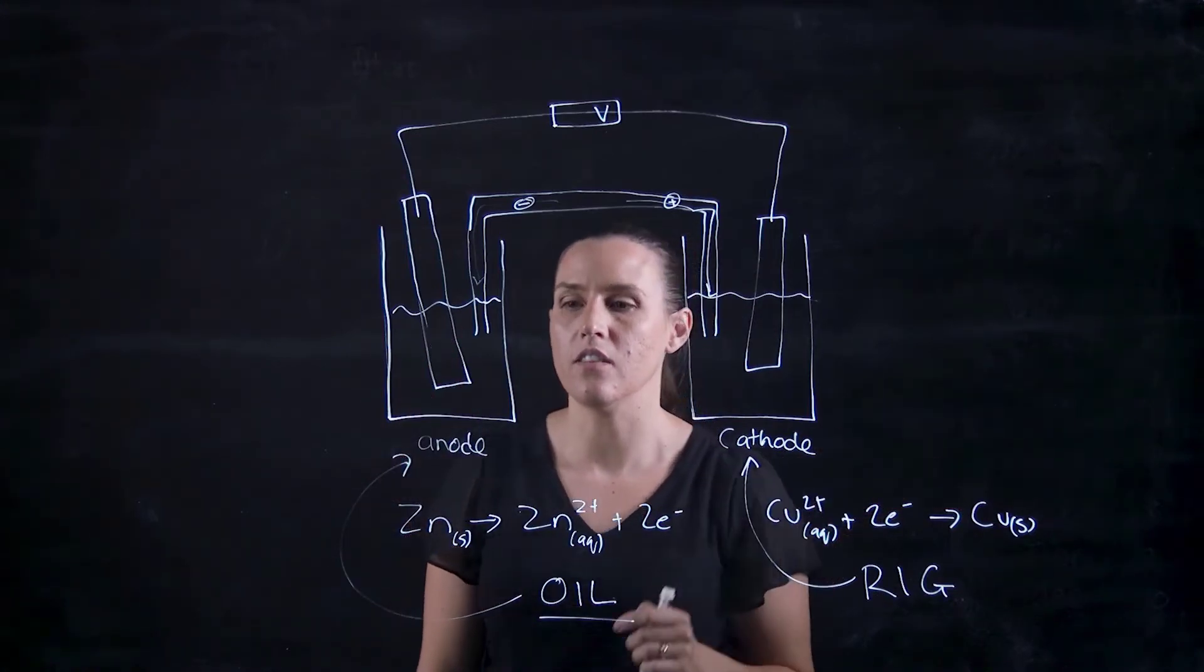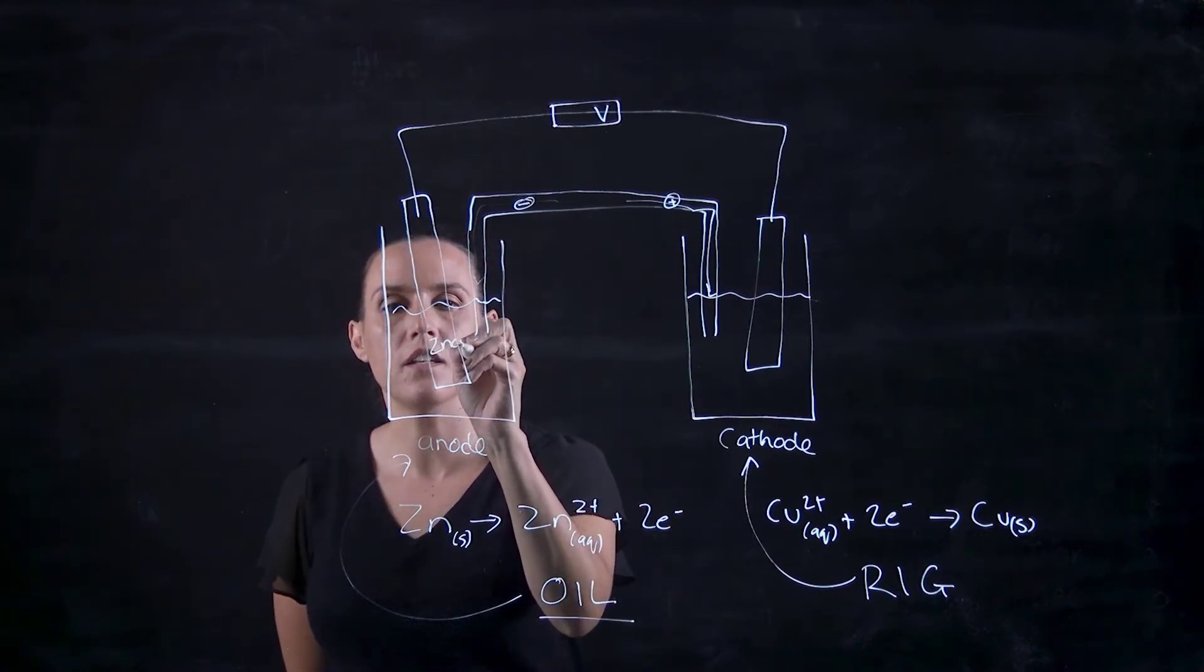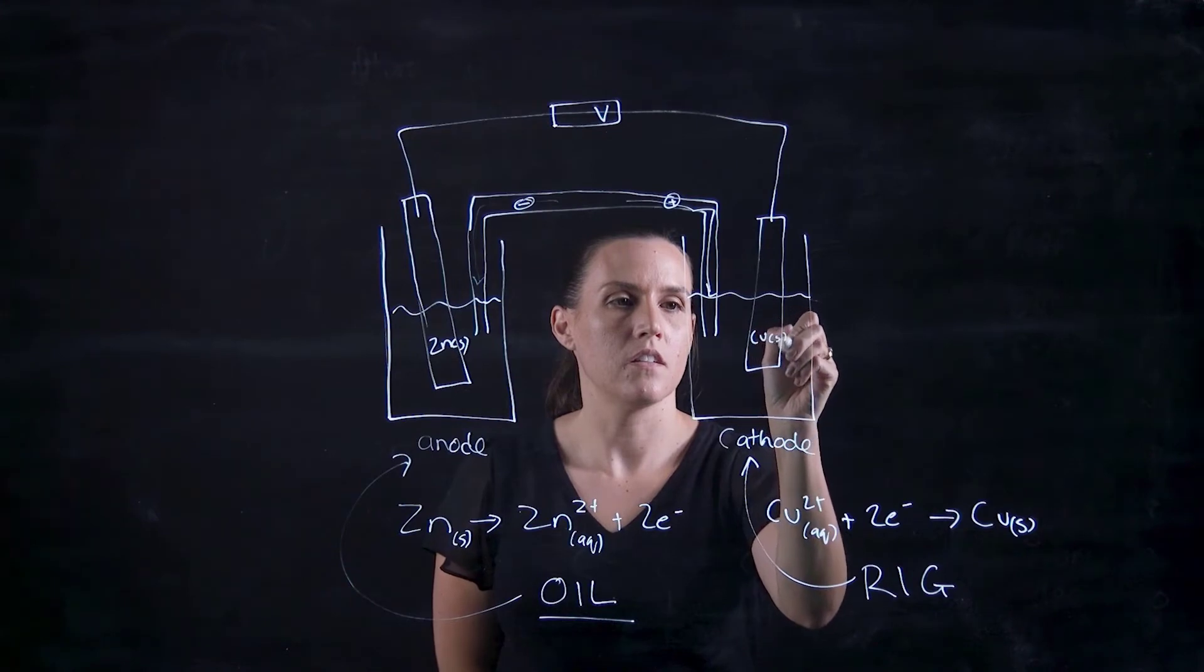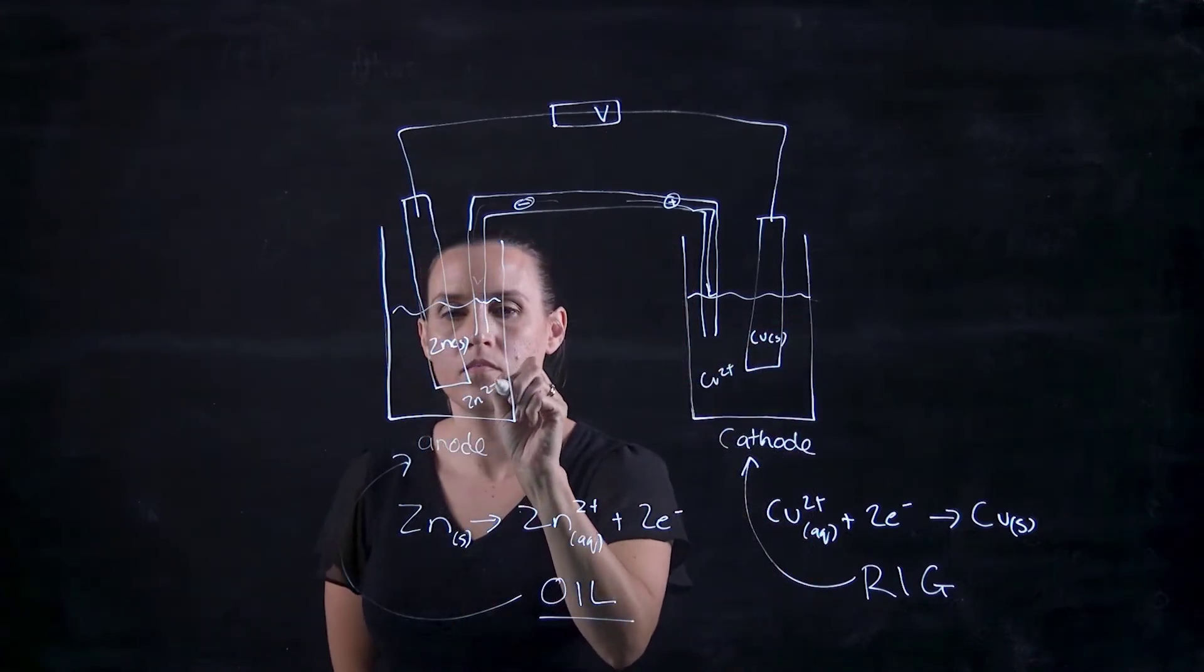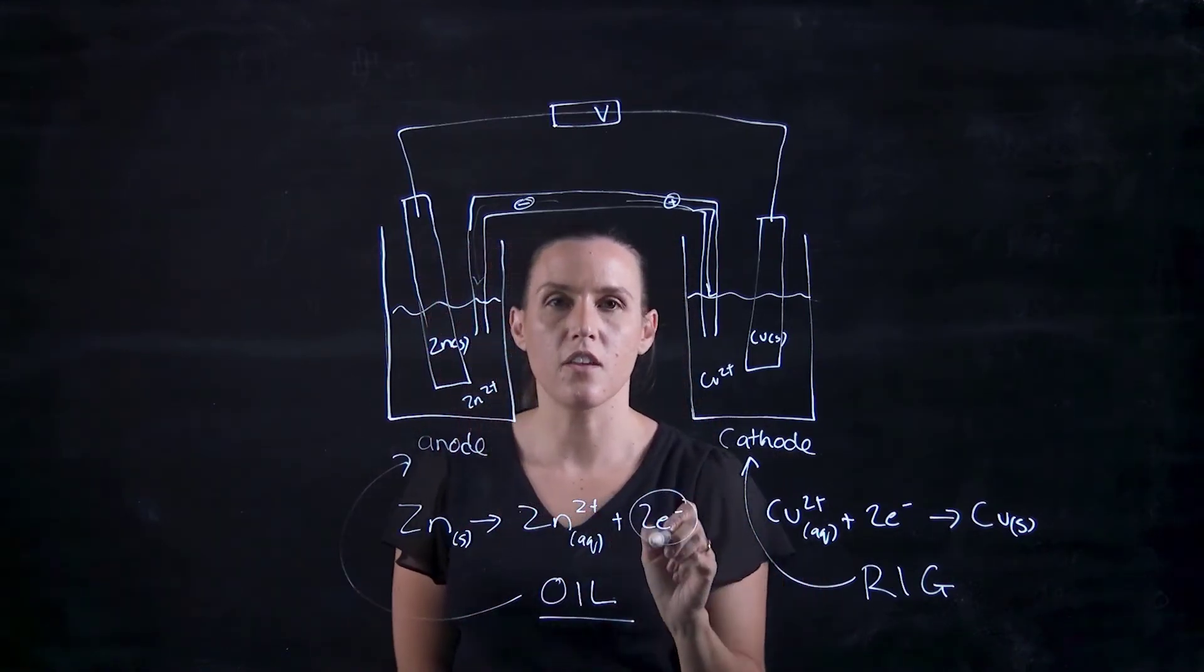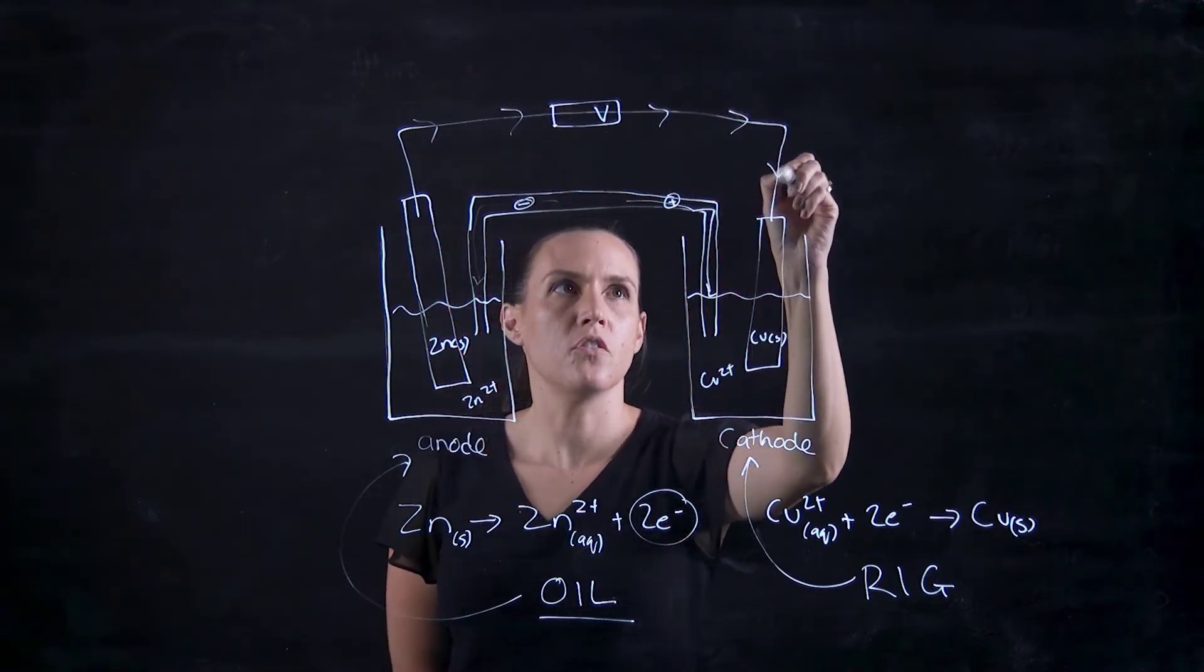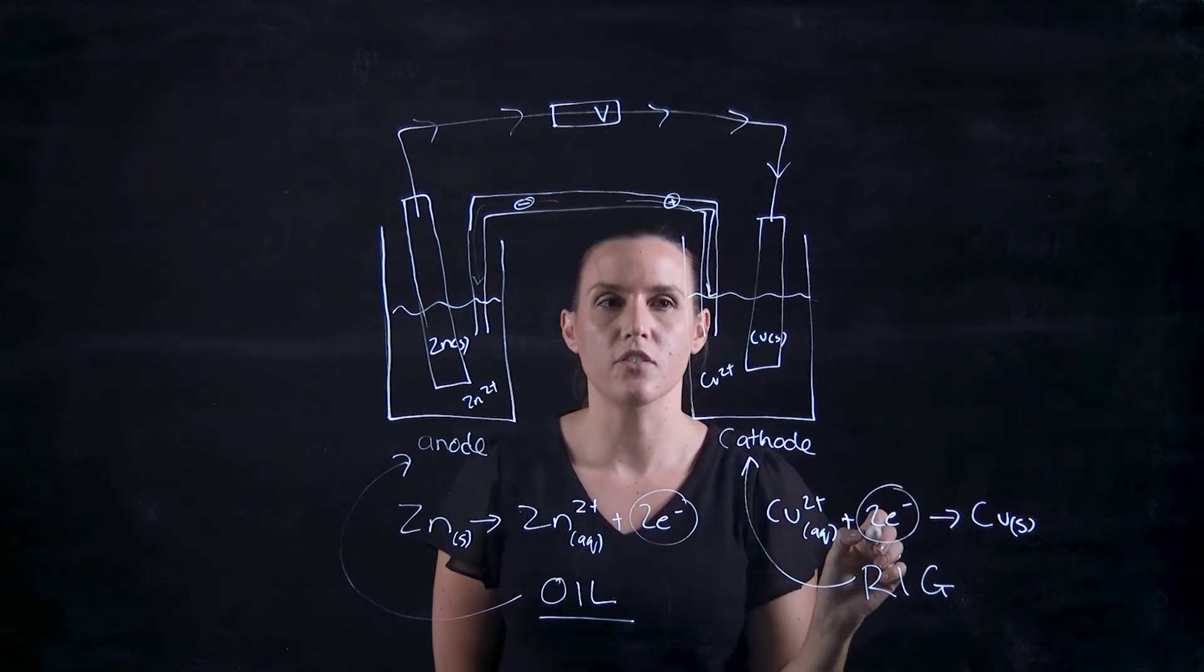This would be my oxidation, so this would be zinc solid, and this would be my copper solid. When the electrons are lost in the oxidation, they travel to the reduction and it picks those electrons up.